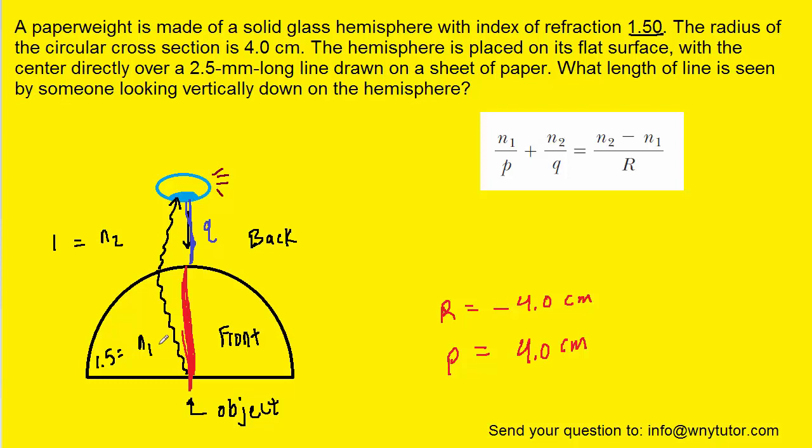With all of that, we can now plug into this formula and try to solve for q. So we've plugged in all the values. Our goal is to solve for q. Why don't we subtract 1.5 over 4 to the other side of the equation?